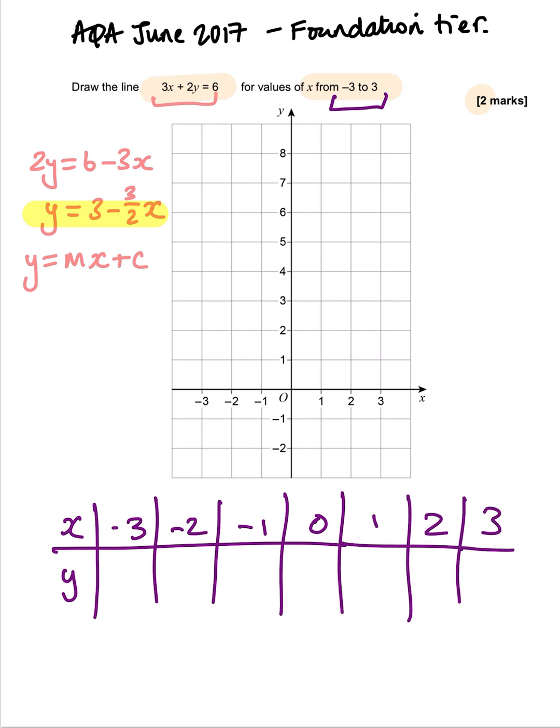Now what we need to know here is we only need 2 points to draw a straight line. So rather than make my life difficult and deal with negative numbers, I'm going to figure out this point and this point. So I'm going to use x equals 0 and x equals 3. And I'm going to substitute those into my equation, y equals 3 minus 3 over 2x.